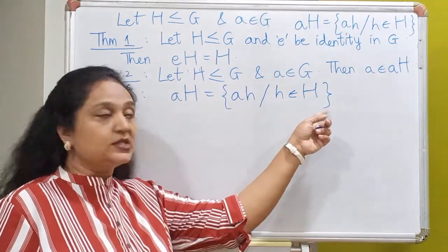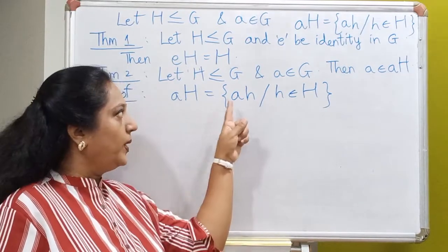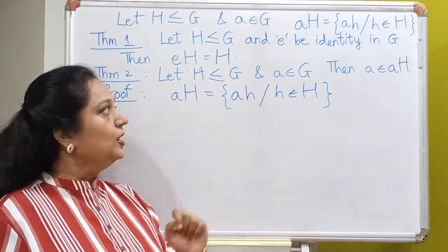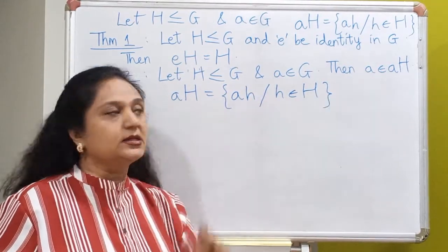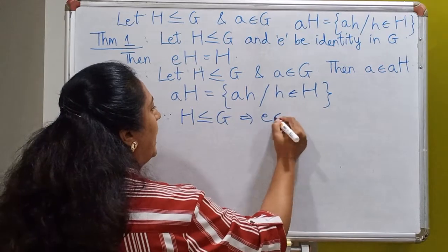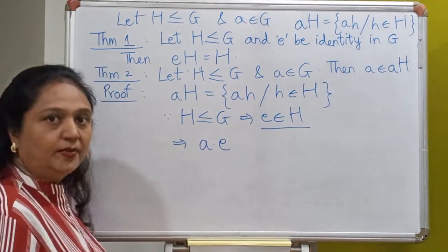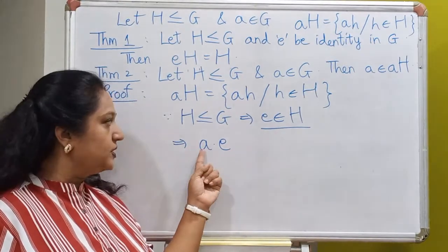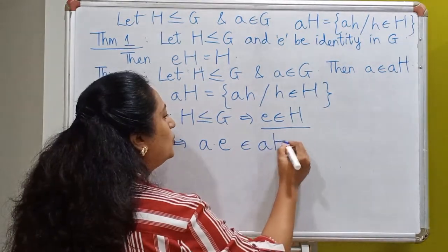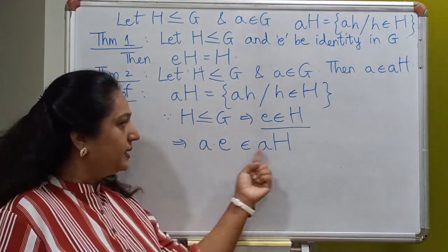AH is defined as A times h where h belongs to H. Every element in this set looks like a product where the first element is A and the second is any element from H. To prove that A lies in AH, remember that H is a subgroup, so the identity E must definitely lie inside H. Look at the product A times E — this is a product where the first element is A and the second element E comes from H. By definition, this product belongs to the left coset AH. But A times E equals A, so A belongs to AH.